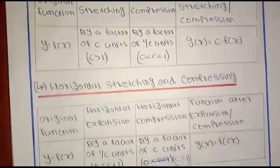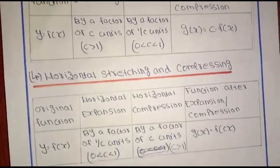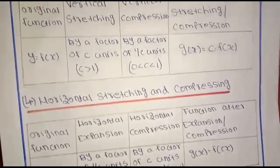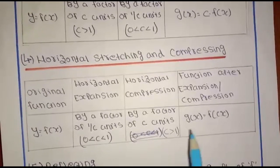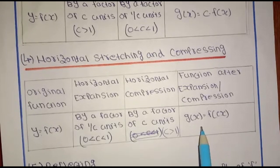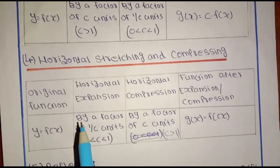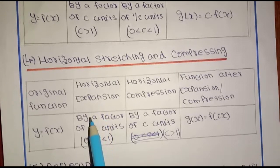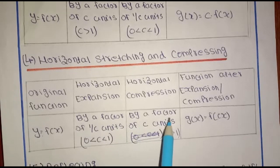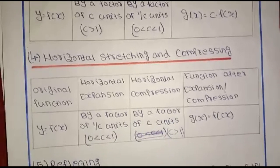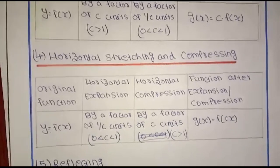This is horizontal stretching and compressing. The function is f of c times x. When c is greater than 1, this is a horizontal compression. When c is between 0 and 1, this is a horizontal expansion by a factor of 1 over c units.